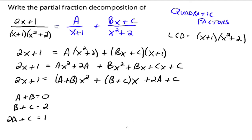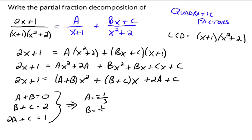You now have a system of three equations with three unknowns. I would plug that into the calculator and do reduced row echelon form, but solve it however you like — you should know how to handle a system of three equations with three unknowns. The solutions are: A equals negative one-third, B equals one-third, and C equals five-thirds.